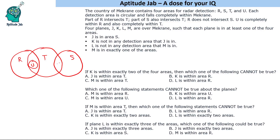If J is in the overlapping area of S and T, then K cannot be inside T either, so K has to be inside R only. The next condition says L is not in any detection area that M is in. So if M is in T, then L cannot be in T — it has to be in either only R or only S, a different region.